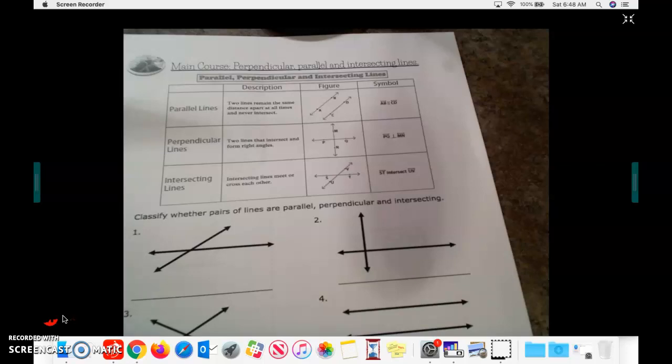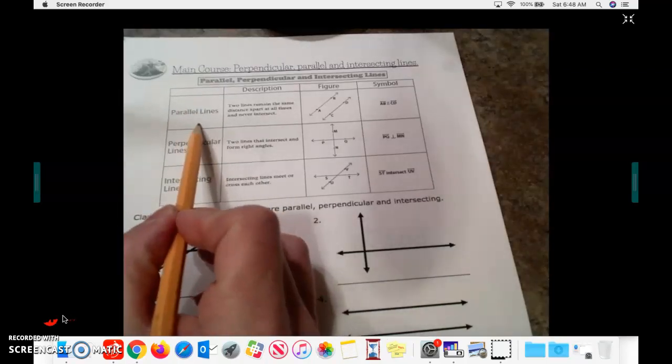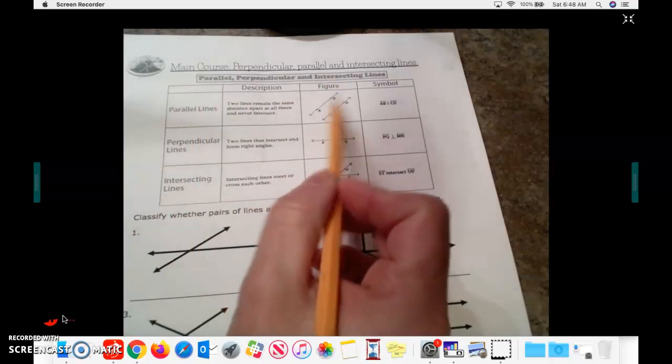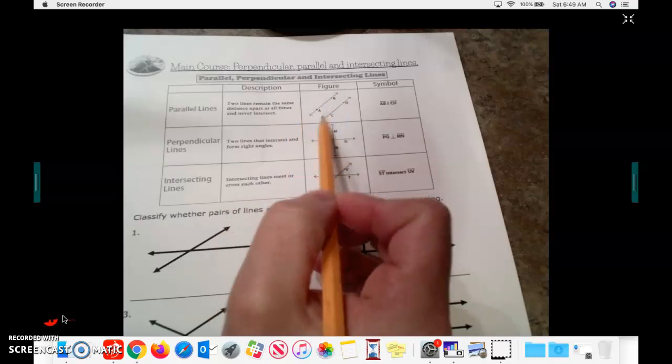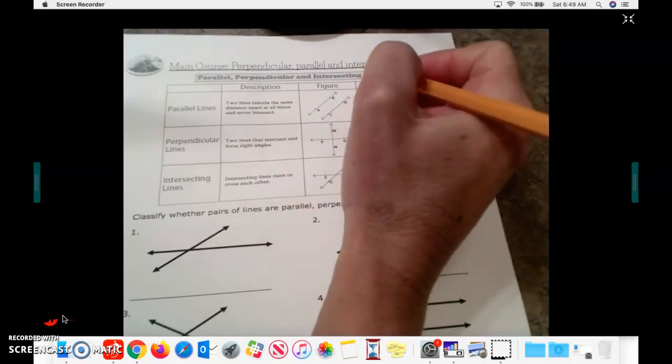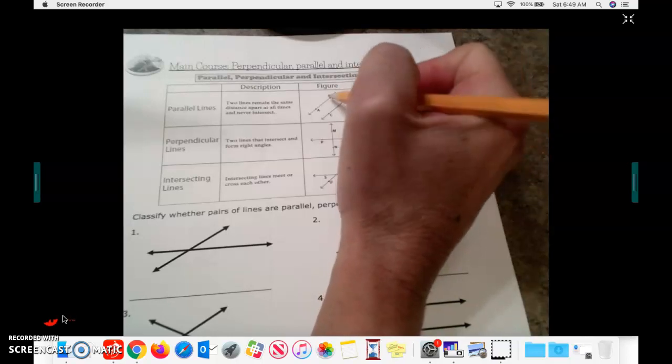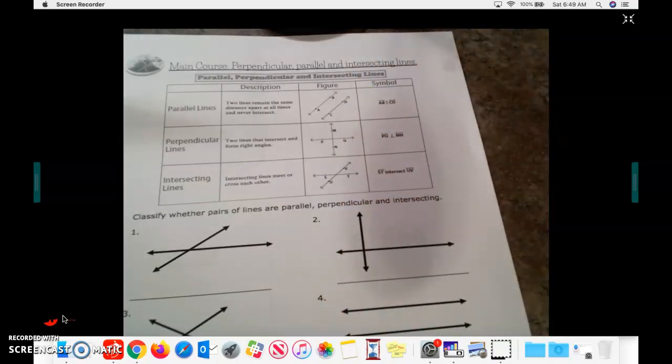So, for example, parallel lines, and you may already have some schema or some information with regard to this, are two lines that are moving in the same direction, and they are never going to intersect. So if I would keep drawing this line out, these two lines would never cross. So those are considered parallel lines.